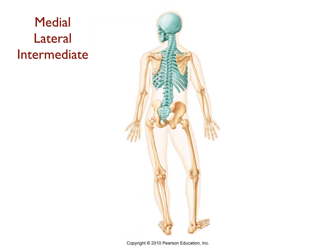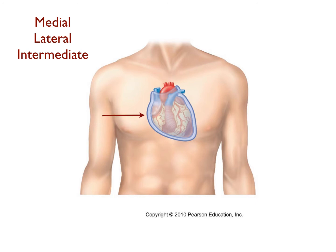We'll discuss the next three terms together, since they relate to each other. Those three terms are medial, lateral, and intermediate. Medial refers to structures that are toward the midline of the body, while lateral structures lie away from the midline. For example, the spinal column, which lies along the midline of the body, is a medial structure. The humerus, which lies to the side of the body, is lateral. Intermediate refers to structures that are between a more medial and a more lateral structure. Therefore, we say that the scapula, which lies between the spinal column and humerus, is intermediate between the spinal column and humerus. As another example, the heart is medial to the arm, and the arm is lateral to the heart. The right lung, which lies between the heart and right arm, is intermediate between the heart and arm.